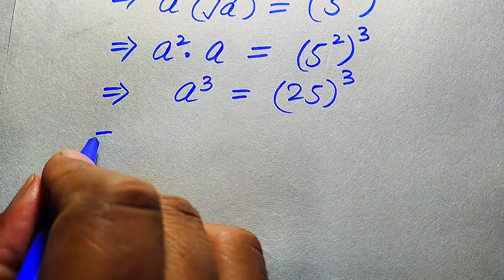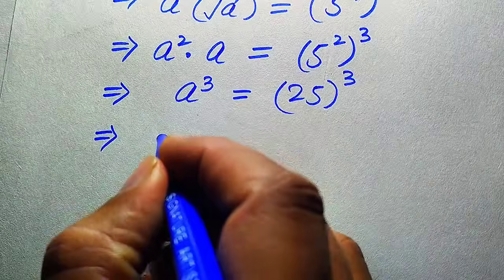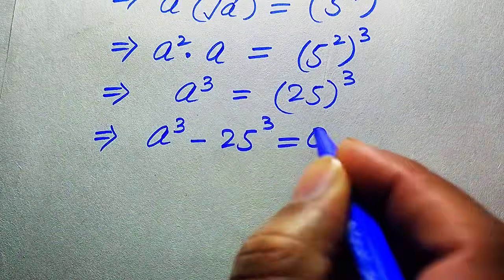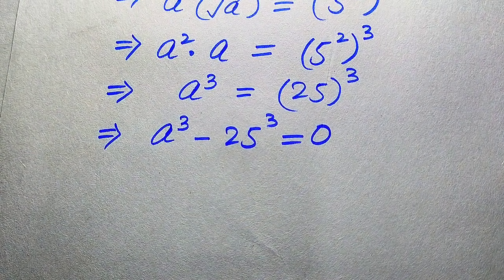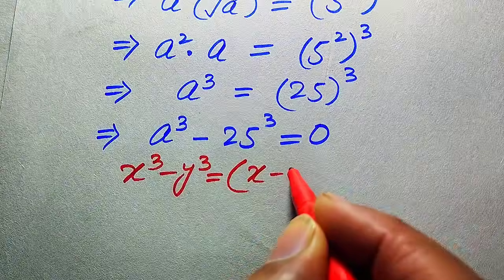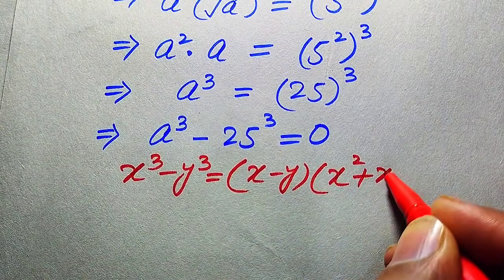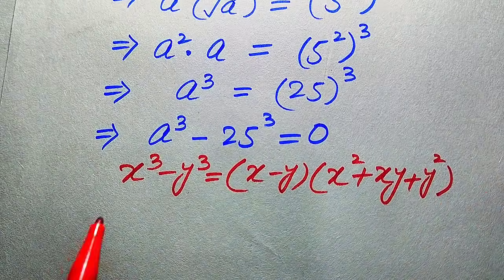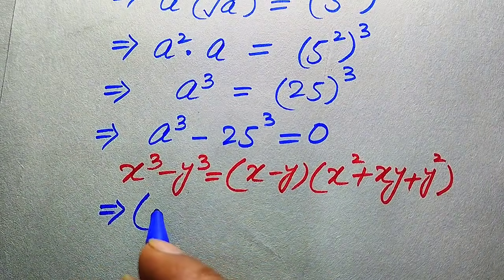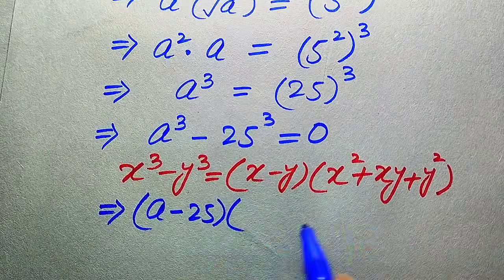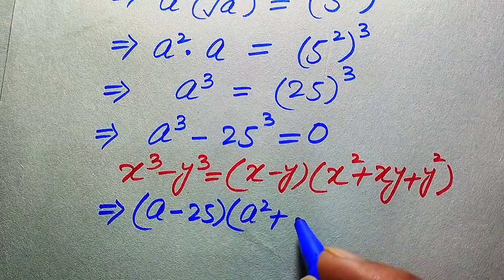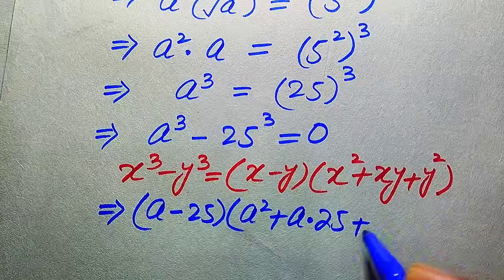In the next step we move 25³ from the right hand side to the left hand side, giving a³ minus 25³ equals zero. Here we use the cubic difference formula: x³ minus y³ equals (x minus y)(x² plus xy plus y²). Applying this formula with x = a and y = 25, we get (a minus 25)(a² plus 25a plus 25²) equals zero.